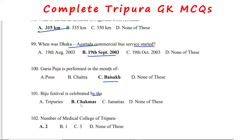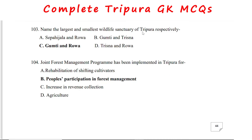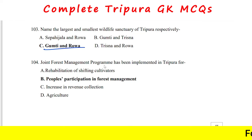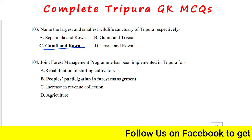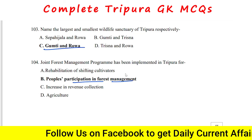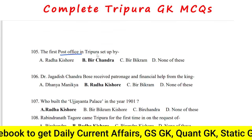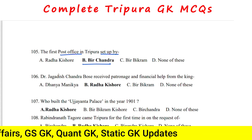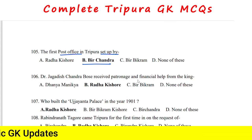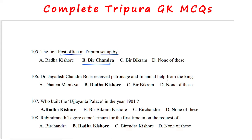The Dhaka–Agartala commercial bus service started on 19th September 2003. Gariya Puja is performed in the month of Baishakh. Viju festival is celebrated by the Chakmas. The number of medical colleges in Tripura is two. The largest wildlife sanctuary is Gumuti and the smallest is Rua. Joint Forest Management Program has been implemented in Tripura for people's participation in forest management. The first post office in Tripura was set up by Maharaja Birchandra Manika.